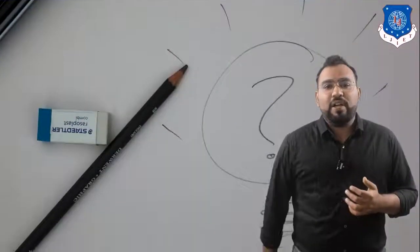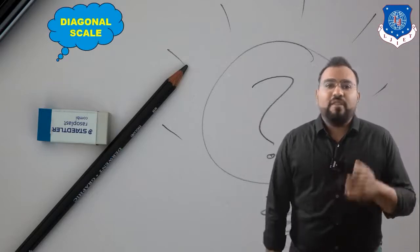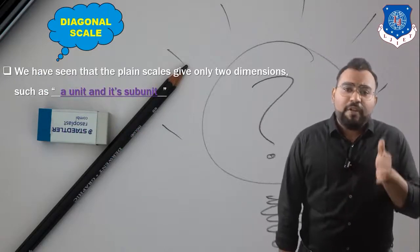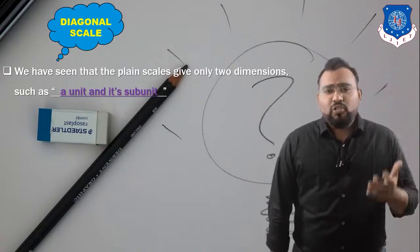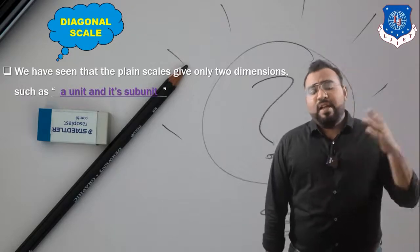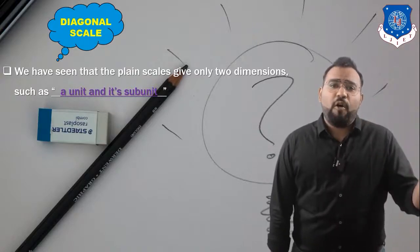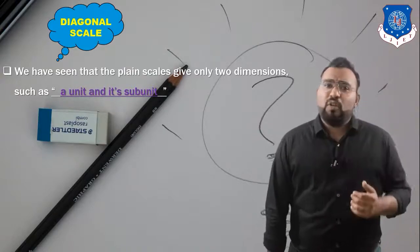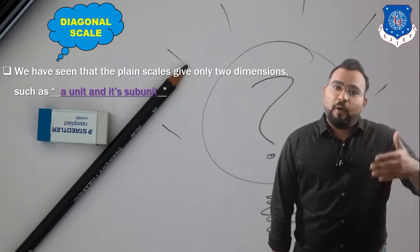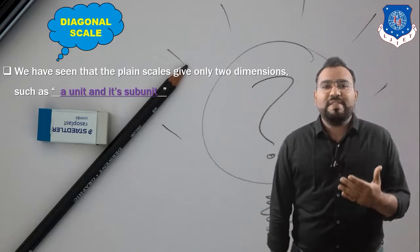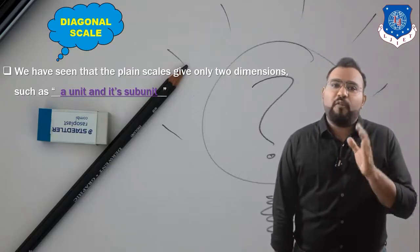Let's start today's video with the topic called diagonal scale. Before I define a diagonal scale, I want to explain why we need it. In plane scale, we can measure a unit and its subunit. For example, 4.3 meters means four meters and three decimeters, where meter is the unit and decimeter is the subunit.